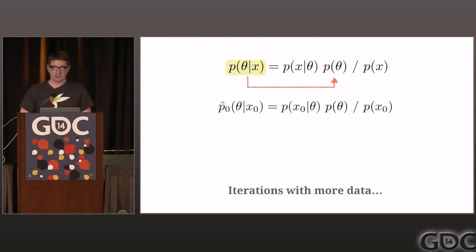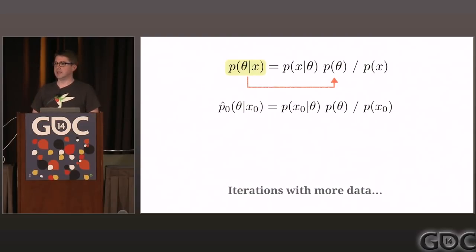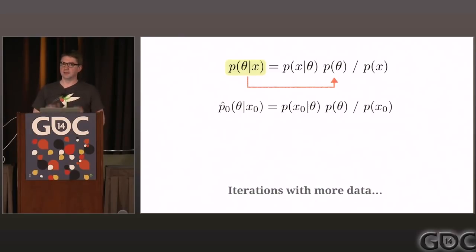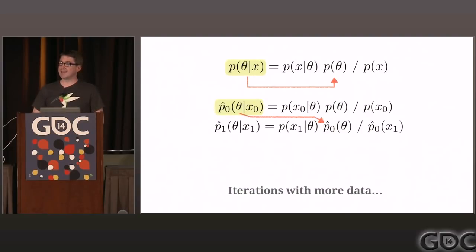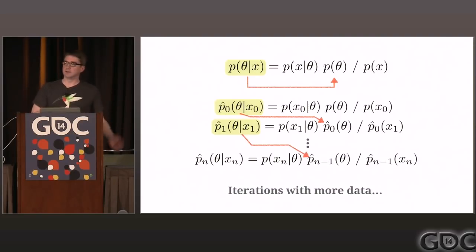We start with an initial guess — a prior. We believe the coin is fair and create a distribution based on that. We know our likelihood — the binomial. We observe data — coin tosses, looking at how many heads or tails in 10 tosses. We plug that into our likelihood function, multiply everything together, and get a new result: the posterior. This new result is essentially a new distribution saying, based on everything we've seen, this is our best guess of how fair the coin is. It's still a distribution of probabilities. We then plug that back in as the starting point for the next iteration, continually refining, and at any point in time we have a new belief about the conversion rate.